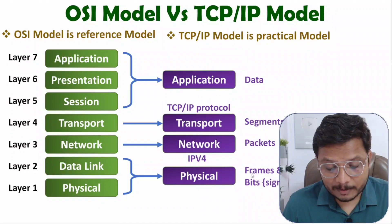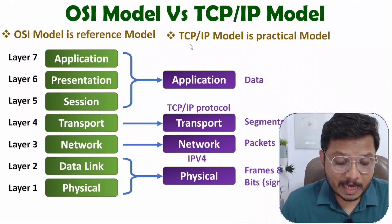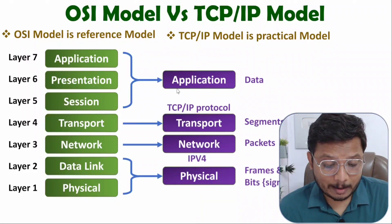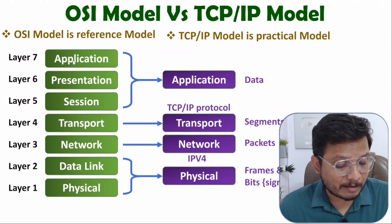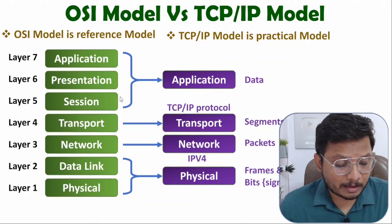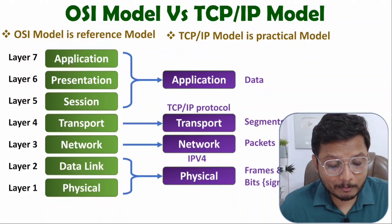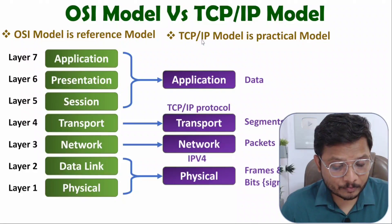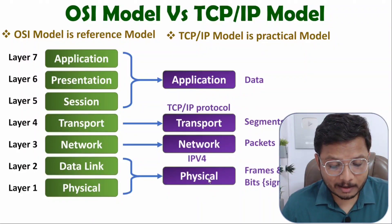Frames are converted into bits and signals in the physical layer. So TCP/IP model has four layers in total: application, transport, network, and physical — while OSI model has seven layers. All tasks remain the same; the only difference is that OSI's three upper layers combine to form TCP/IP's application layer, and OSI's data link and physical layers combine to form TCP/IP's physical layer.